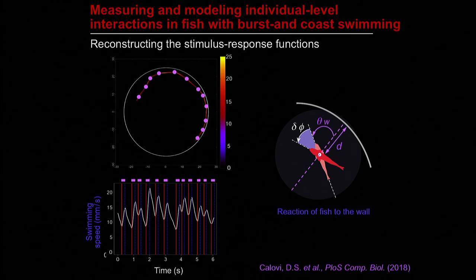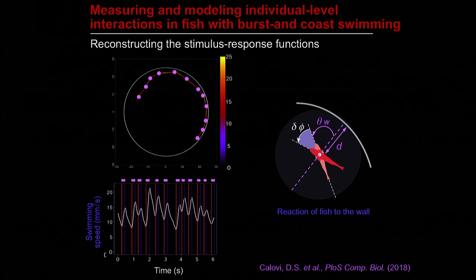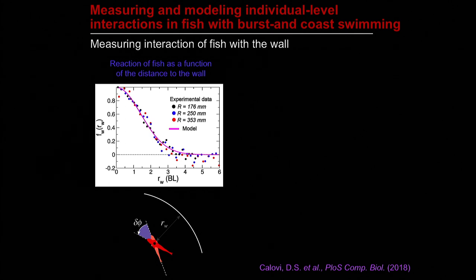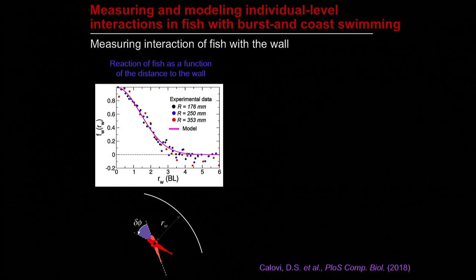When a fish is swimming alone, the information it uses can be, for instance, the distance to the wall or its orientation relative to the wall. We can measure the behavioral response — the amplitude of angular change when detecting the wall. We observe that a fish mainly avoids the wall when it comes close to it, performing a kick that sends it away. This curve corresponds to the intensity of the avoidance reaction as a function of distance to the wall, and the range of interaction with the wall is about two body lengths.